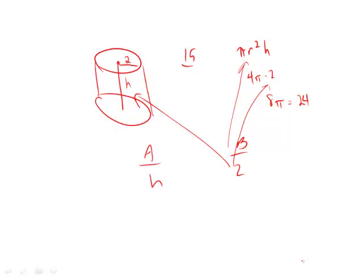Pi is 3.14, so 24 and change. And wow, we went way over 15, therefore h has to be smaller, and b is the answer.